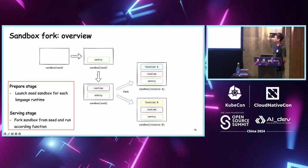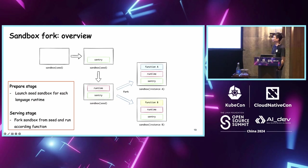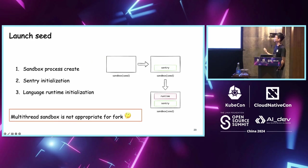We have two stages for sandbox fork. The first is the prepare stage, where we prepare a sandbox seed which will be used to fork. The serving stage happens each time a request arrives: we fork a new sandbox from the seed and run the function inside the new sandbox. In the prepare stage, we launch the seed by performing three steps: create the sandbox, initialize the guest kernel Sentry, and initialize the language runtime. There is a problem that blocks us from forking a sandbox: the sandbox process itself is a multi-thread process, and a multi-thread process cannot be forked properly because the Linux clone system call has single-thread semantics.